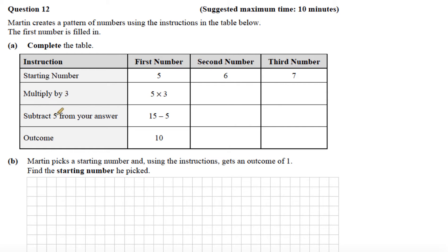Then it says subtract 5 from your answer. So 15 subtract 5 leaves us 10, which is our outcome or our answer.